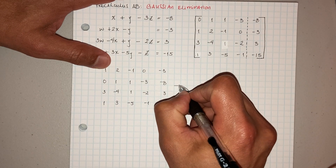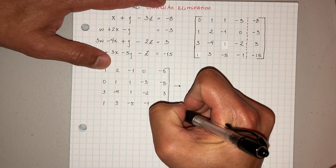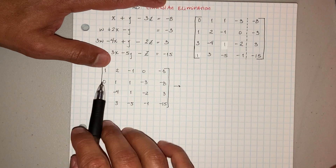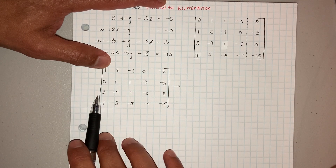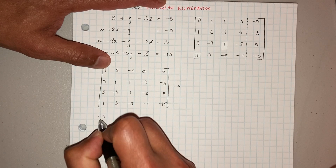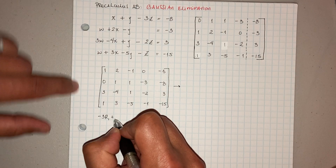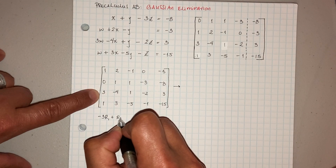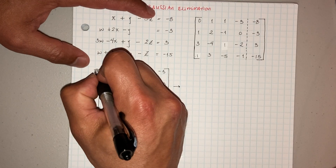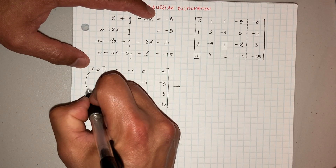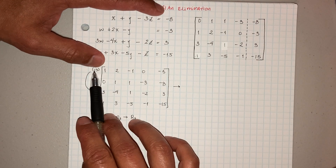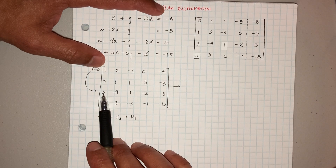I'll try to go nice and slow. So I'm going to go ahead and take this first row, multiply it by negative 3, and add it to the third row. So negative 3 times row 1, add it to row 3, and that goes into row 3. So negative 3 times 1 is negative 3, plus 3 is 0.